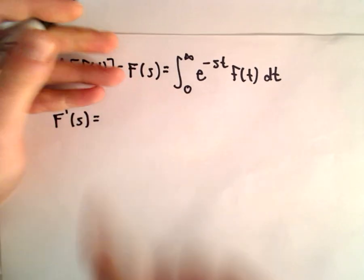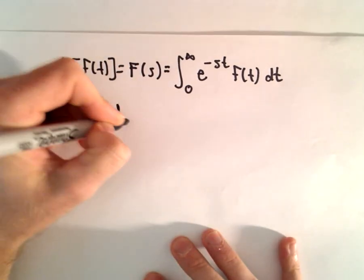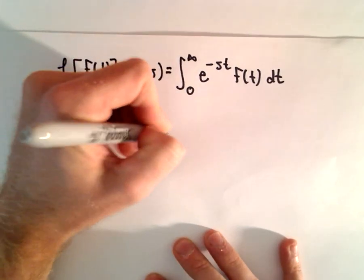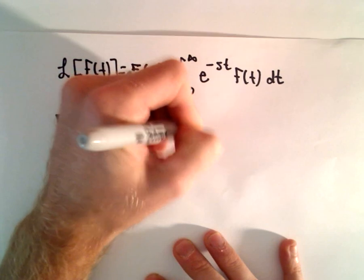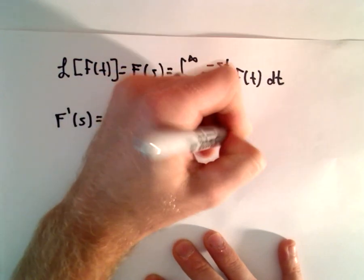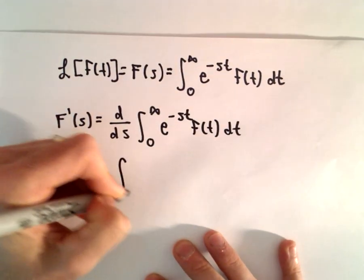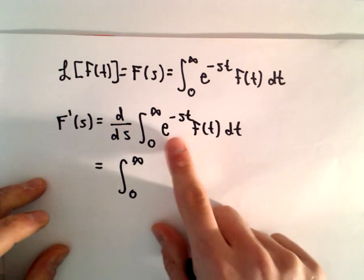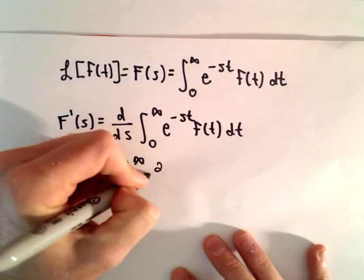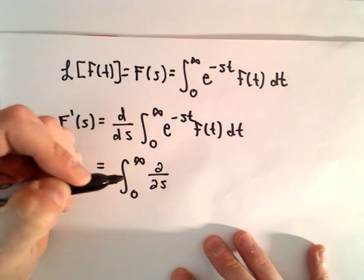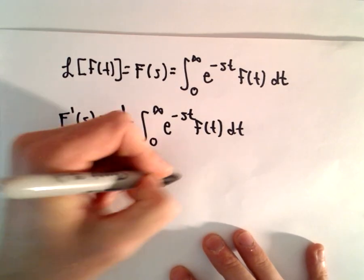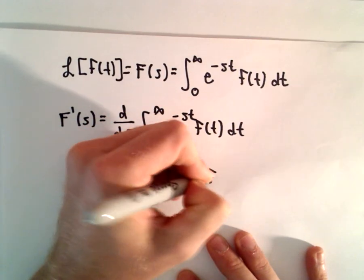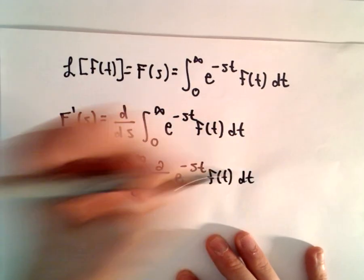Notice if we take the derivative F prime of s, I'm just going to take the derivative here. We would have to take the derivative of the right side as well — that's all I'm doing on this first step. I'm going to pull the derivative inside, but since we have two variables s and t, I'm going to write it as a partial. So we're taking the partial derivative with respect to s of e to the negative s t times f of t, dt.